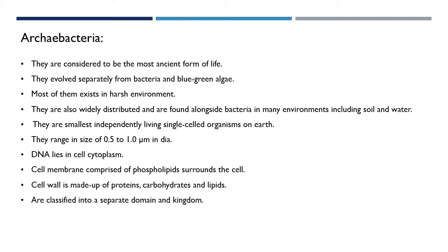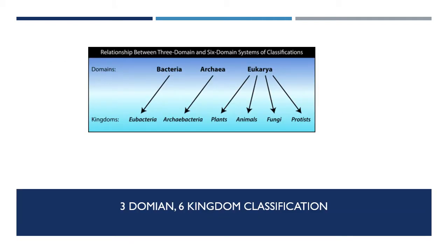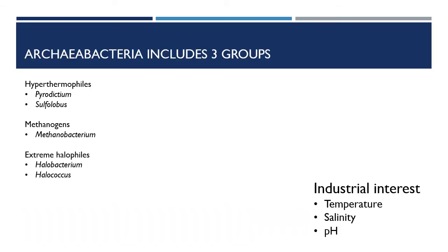They are classified into a separate domain and kingdom. There is a three-domain, six-kingdom classification given by Carl Woese. The three domains are bacteria, archaea, and eukarya. Under bacteria, the kingdom is eubacteria; under archaea, there is a single kingdom, archaebacteria. Eukarya has four kingdoms: plants, animals, fungi, and protists. We are focusing on archaea, that is kingdom archaebacteria.